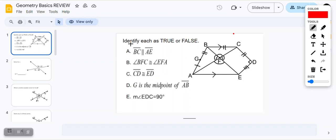For these, we're trying to identify each as true or false. The first one is BC. Let's find BC - B to C. This symbol in the middle here means parallel. This symbol that looks like two lines that are next to each other, they look parallel, means parallel.